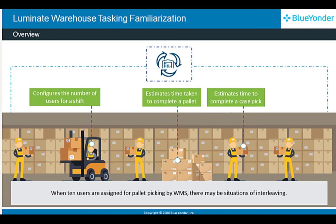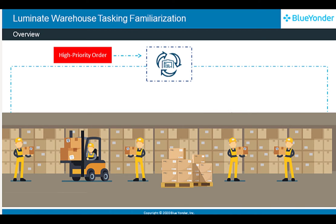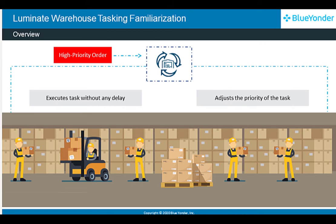It helps configure the number of users available for a shift. For example, with 10 users assigned for pallet picking by WMS, there may be situations of interleaving. These are managed by LWT in such a way that tasks are executed without any delay. Also, in case of a high priority order that requires the effort of 5 workers, LWT helps execute the task without any delay and adjusts the priority. It also provides visibility to orders executed in the warehouse.